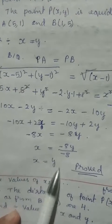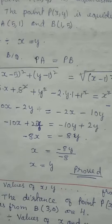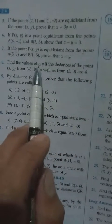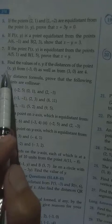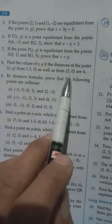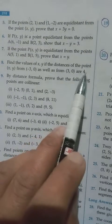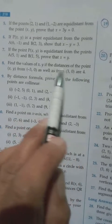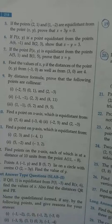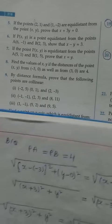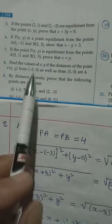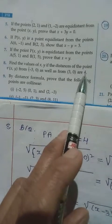So we get x equals y, which proves the question. Moving on to question number 8. Here we have to find the value of x and y for a point P(x, y) that is equidistant from (-3, 0) and (3, 0), and the distance is equal to 4. Since it is equidistant, we can write PA equals PB, and both equal 4. We use the distance formula.